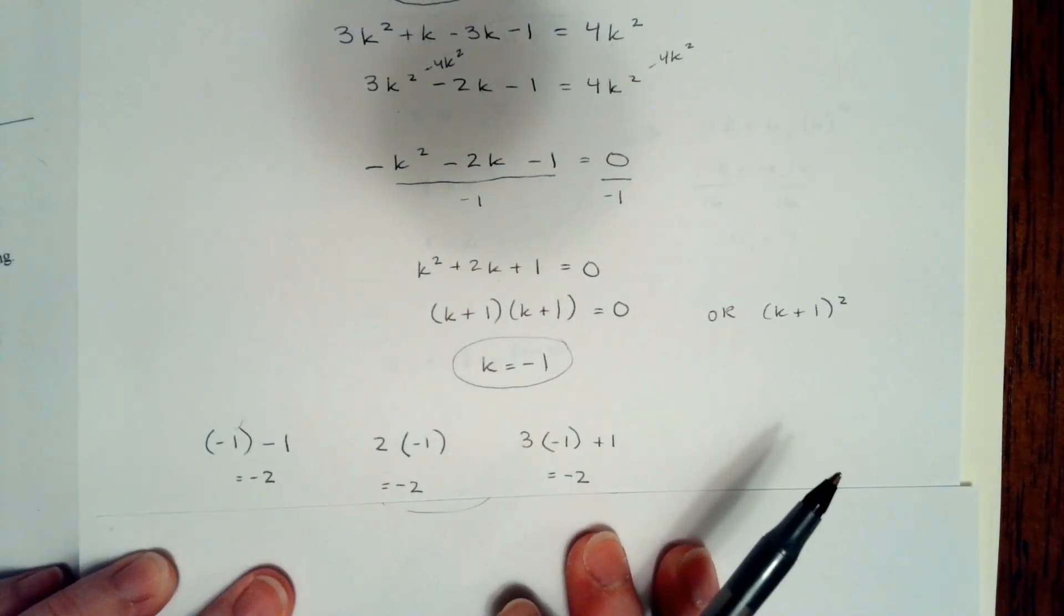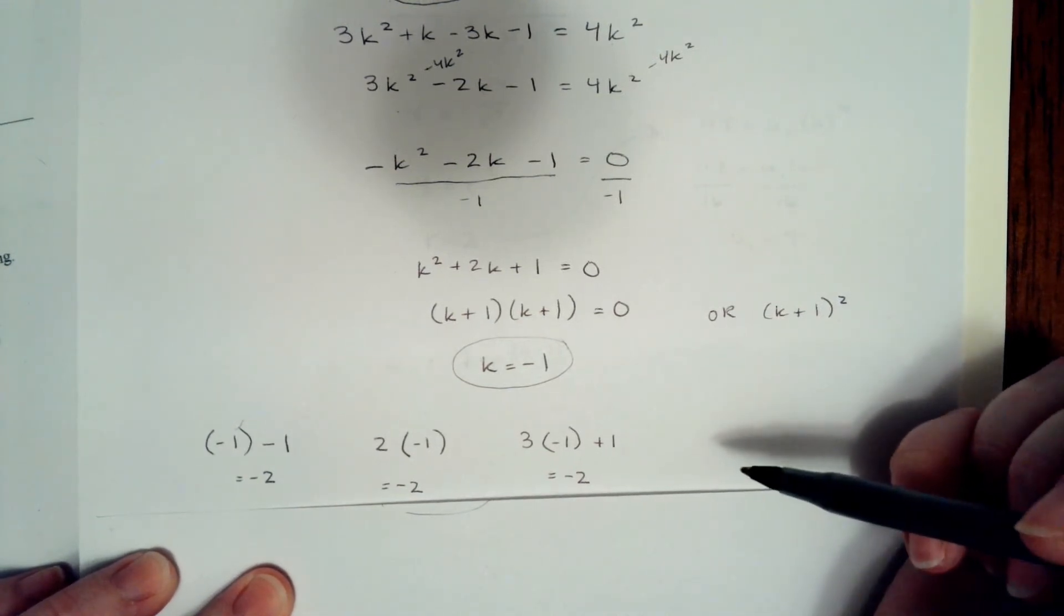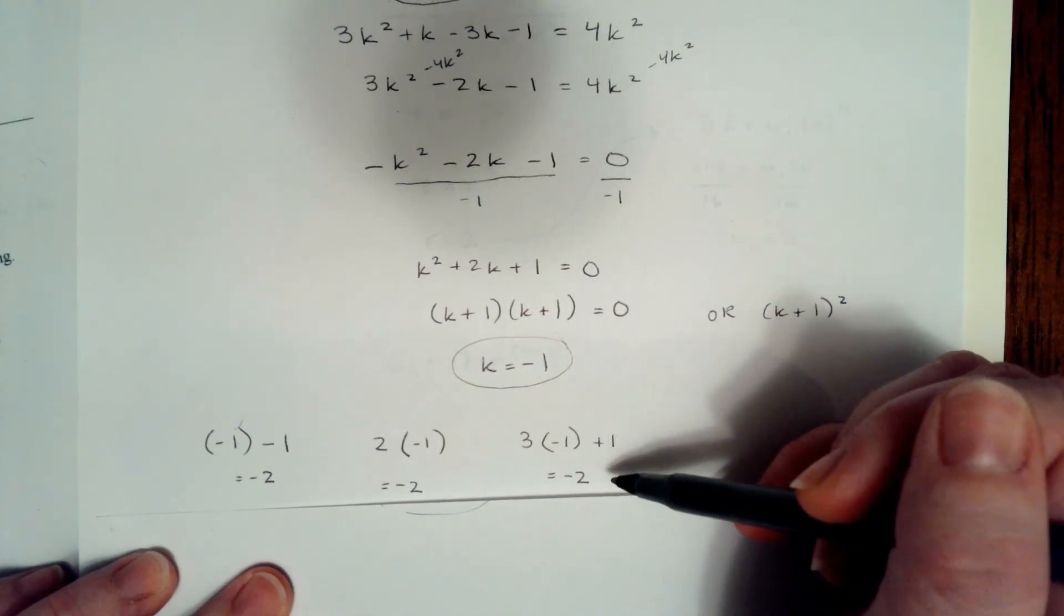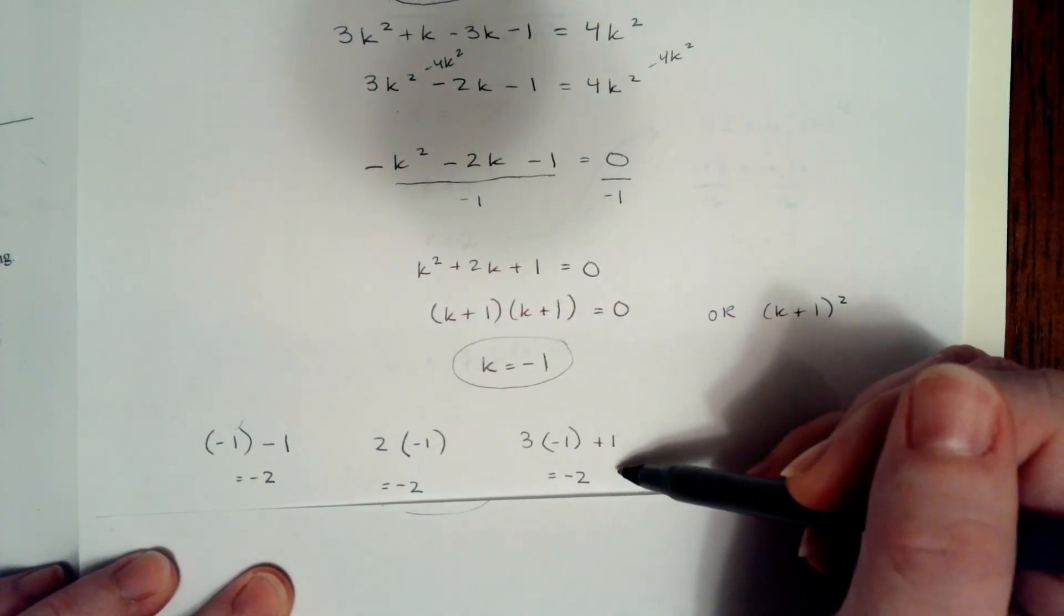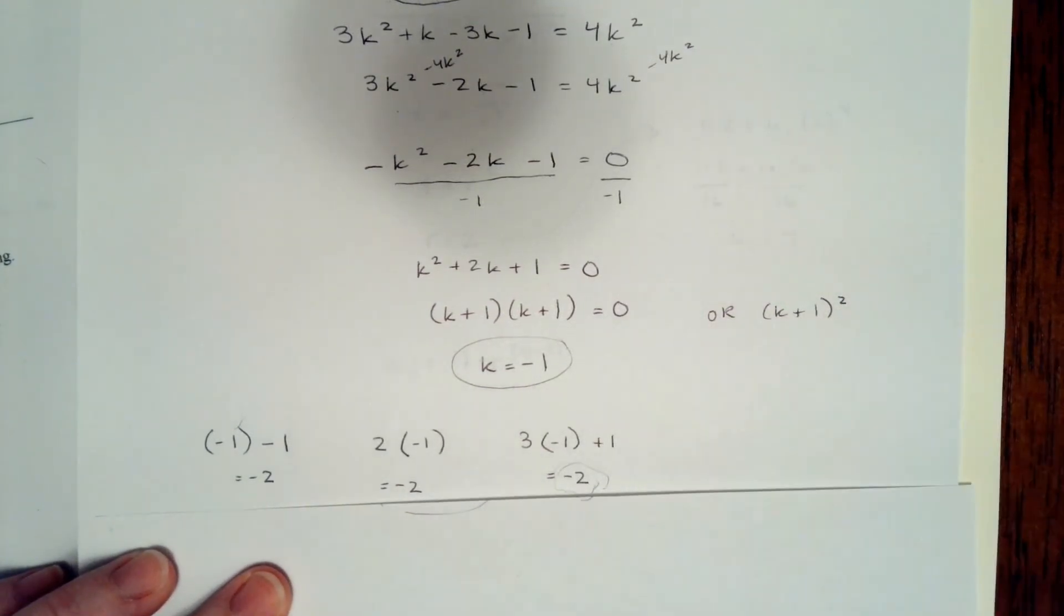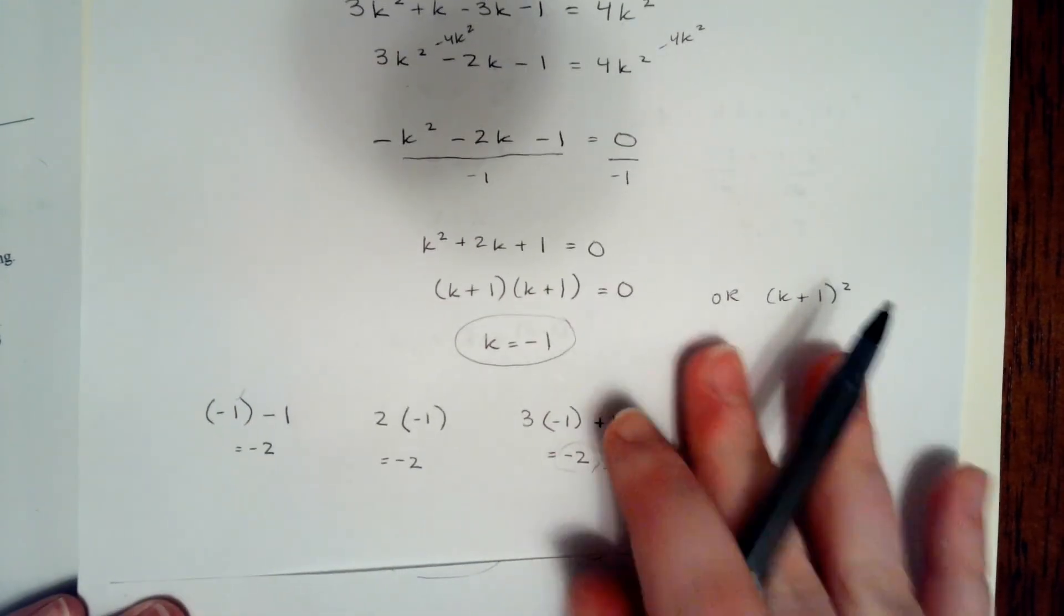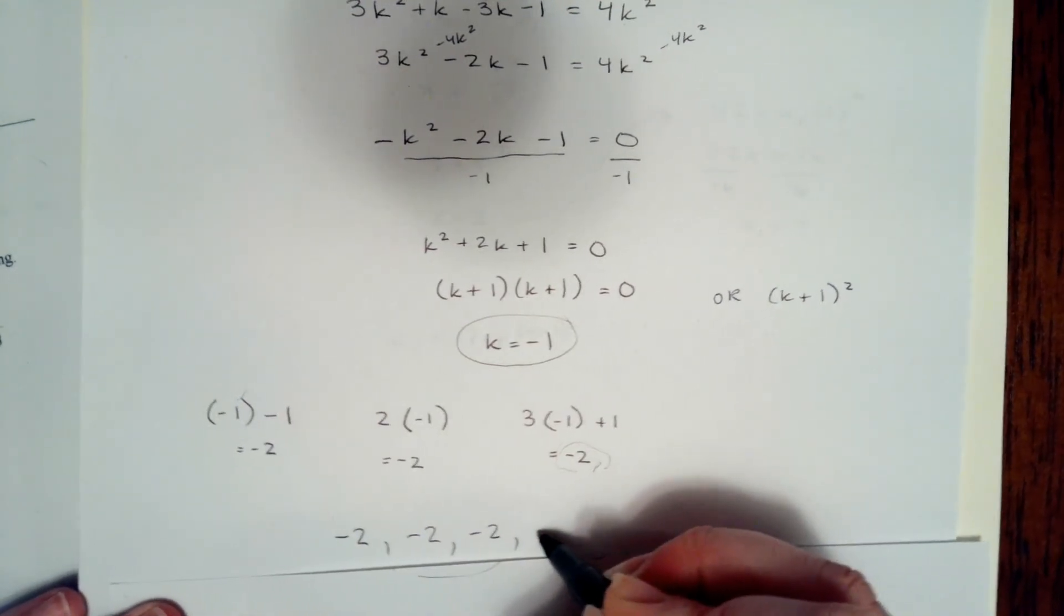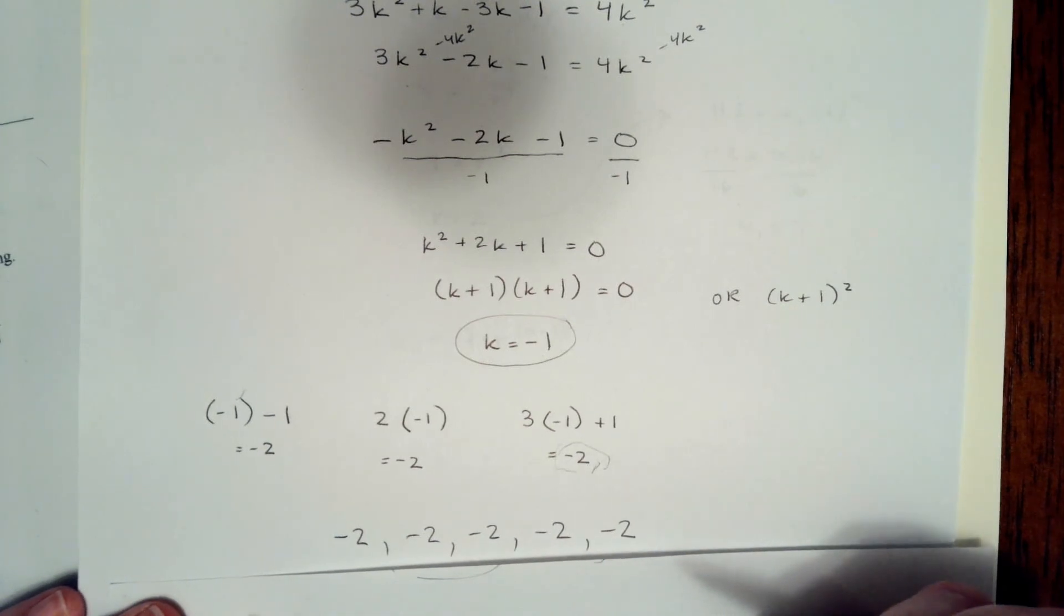So interestingly enough, if we were to go back and solve for the ratio, the ratio is going to come out to tell you that they do not change. All of the terms in this sequence are negative 2. So the next two terms, if we were to write out all of the terms in this sequence, first term, second term, third term, fourth term, fifth term, they're all going to be negative 2.